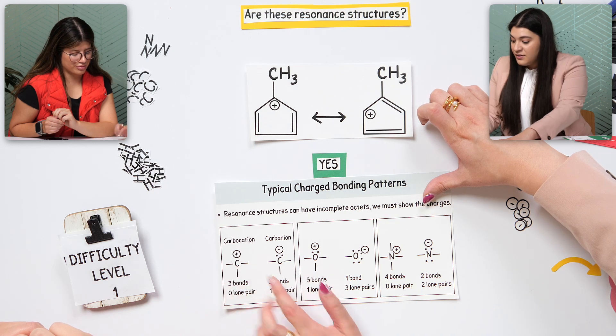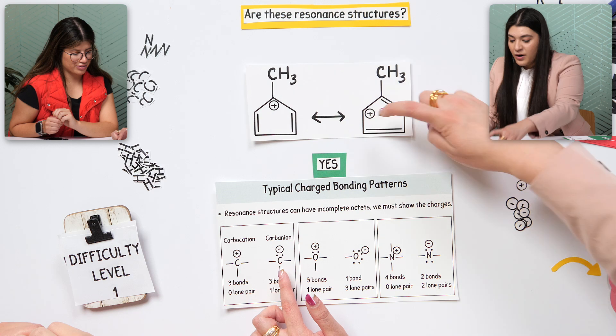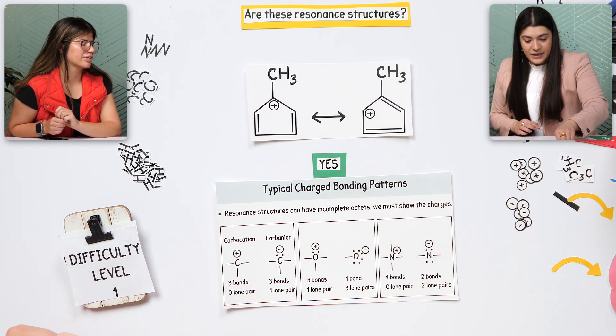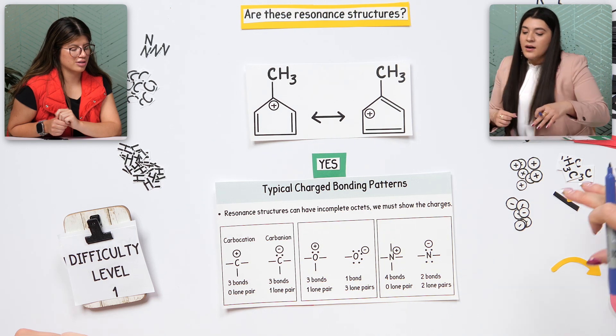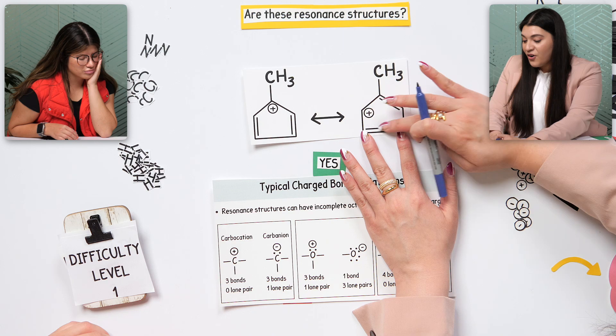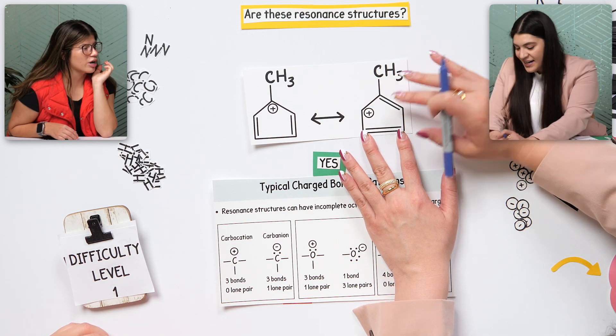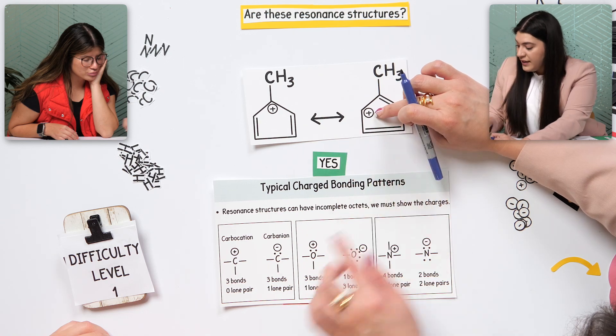So knowing the differences here is going to be super important because we can then see that this is a carbocation. It has three bonds, no lone pair. And I know that, okay, it will have a positive charge. And the other thing to note here, and actually I'm just going to draw it out, is showing that none of these hydrogens moved.